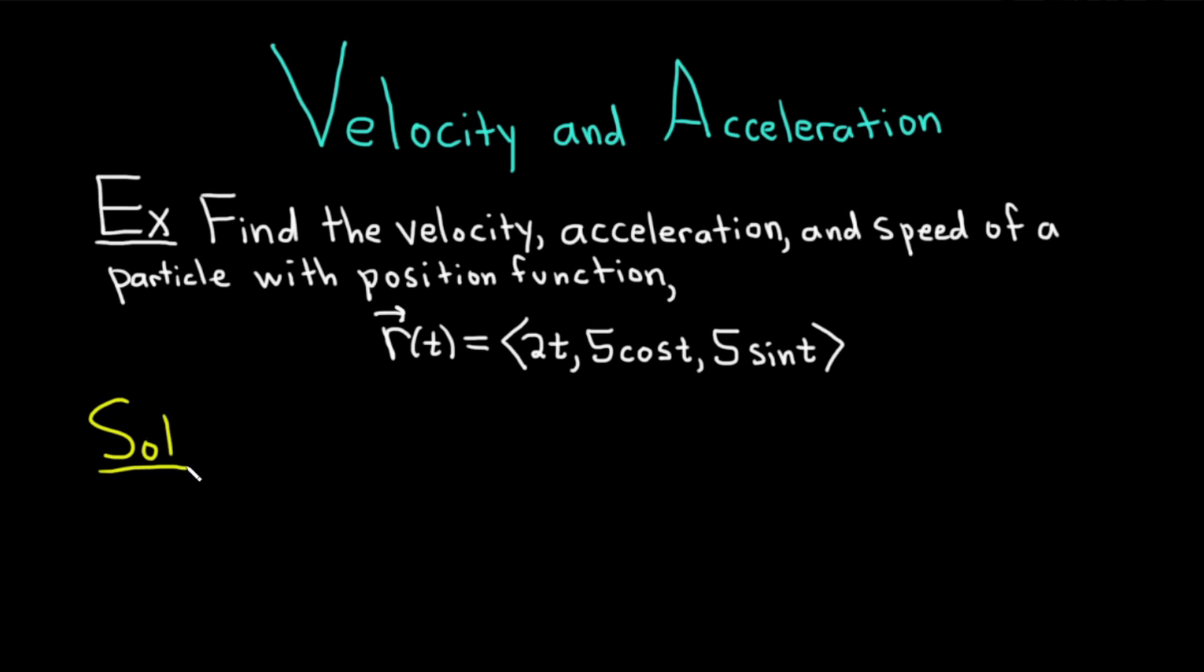Solution. To find the velocity, all we have to do is take the derivative of the position, so r'(t), and to differentiate this vector-valued function, you basically just differentiate each component.